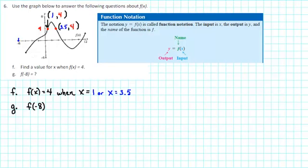So we simply say that f of negative 8 is undefined. So f of negative 8 is undefined. We were not able to locate an output when the input was negative 8.